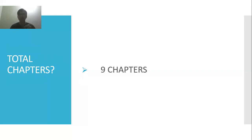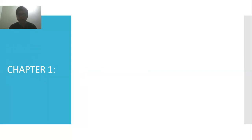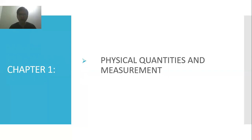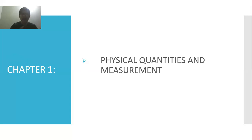Now we are going to start with chapter number one. The name of this chapter is Physical Quantities and Measurement. In this chapter we are going to study about physical quantities and their measurement. The first thing that comes to mind is: what are physical quantities?